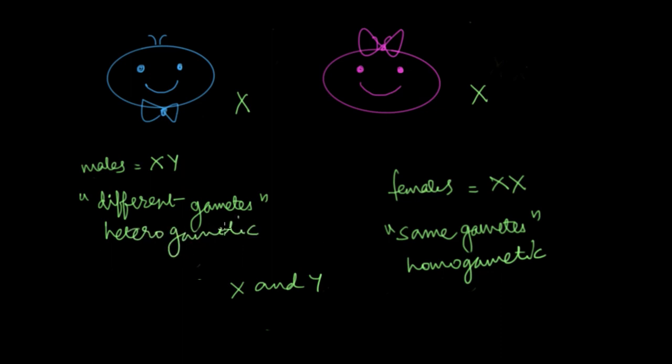Now because of this heterogametic factor, dads can either give out an X or a Y chromosome to his kids. If he gives out an X, he will have a baby girl. If he gives out a Y, he will have a baby boy.